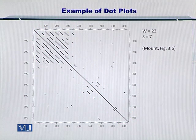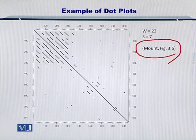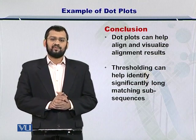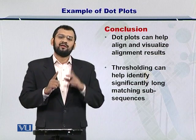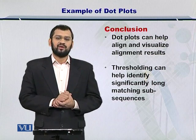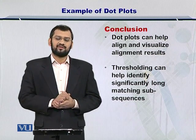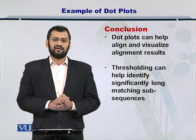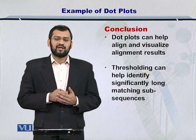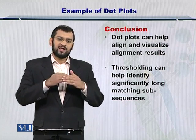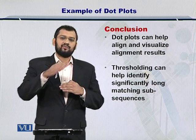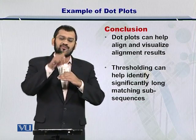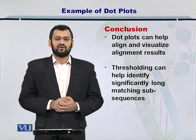This is also provided in your textbook and you can refer to that. In conclusion, dot plots help you to align and visualize the alignment between two biological sequences. The sequences can be protein sequences or DNA or RNA sequences. Also, thresholding can help you identify the longer diagonals within the dot plot. By increasing the threshold you can reduce the number of diagonals that are left within the dot plot.